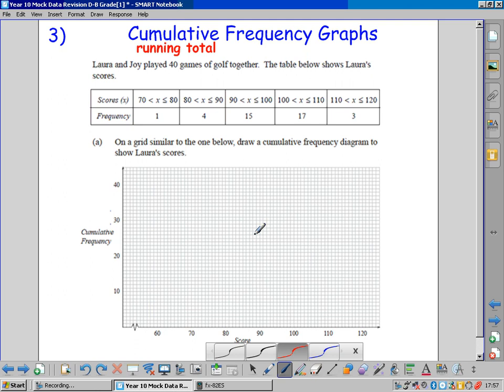So we need an extra row, or if the table was in columns, an extra column. CF for cumulative frequency. Running total. Add up as you go along. 1 is still 1. 1 and 4 make 5. 5 and 15 make 20. 20 and 17 make 37. 37 and 3 make 40. These are our cumulative frequencies, our running totals.